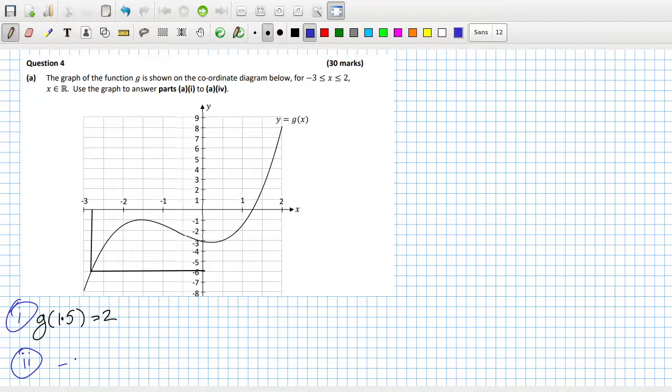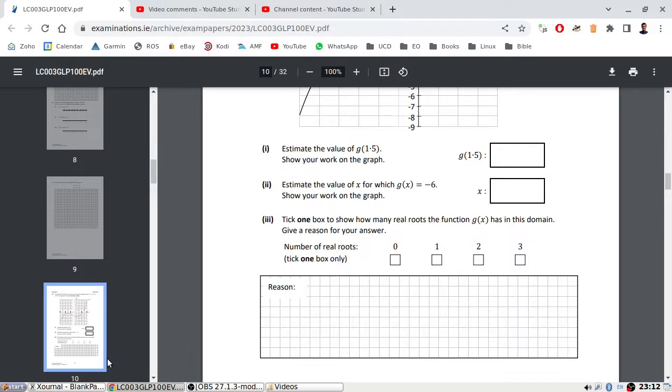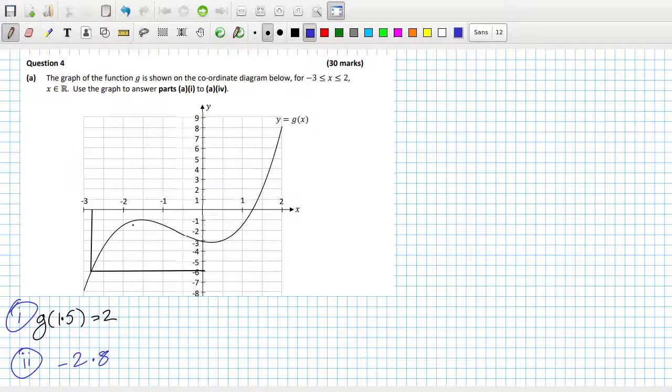Minus 2.8. Tick one box to show how many real roots this function has. Just the one. Crosses x only once.